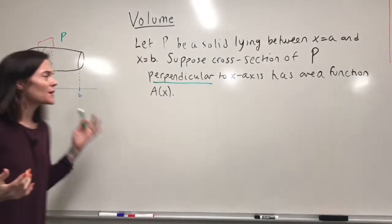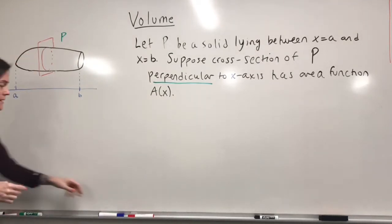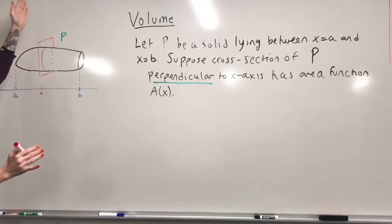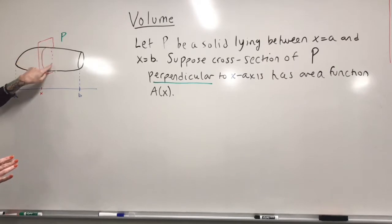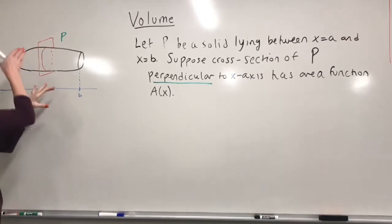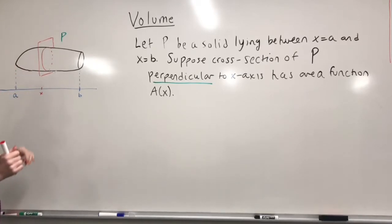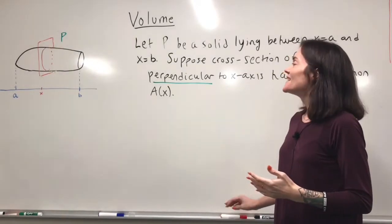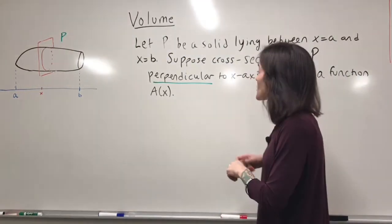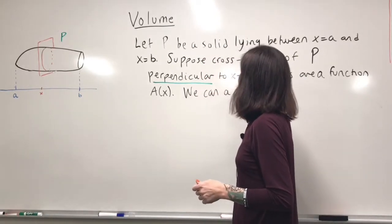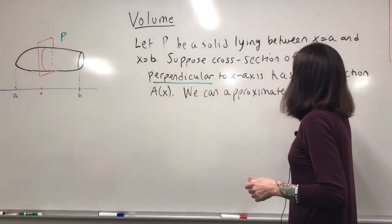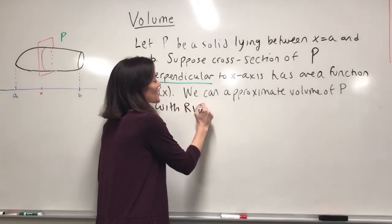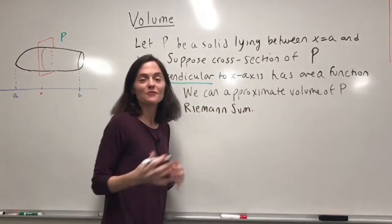A of x needs to be continuous. Looking at the picture: I slice perpendicular to this axis, and this traces out something two-dimensional — the slice on the solid — and it has area. I can do this for every x, so we have an area function A of x. Now we're going to use this to get the volume of the solid. We can approximate the volume of P with a Riemann sum, as they really all come from Riemann sums.